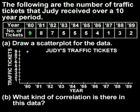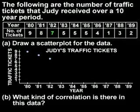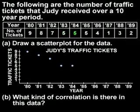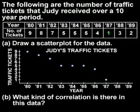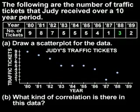In 1980, Judy received 9 traffic tickets. In 1981, she received 8. In 1982, she received 7. In 1983, she received 5. In 1984, she received 5. In 1985, she received 5. In 1986, she received 4. In 1987, she received 1. In 1988, she received 3, and in 1989, she received 2 tickets.